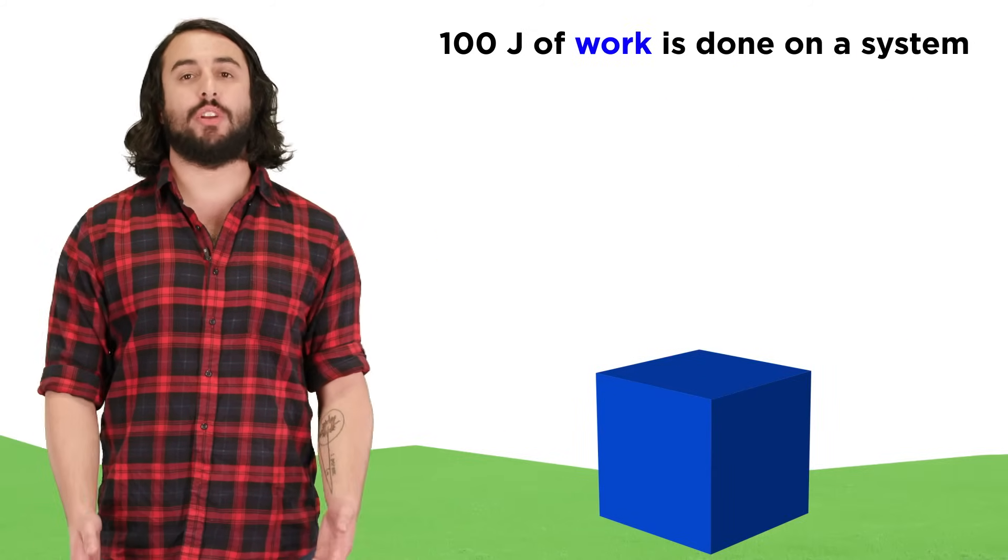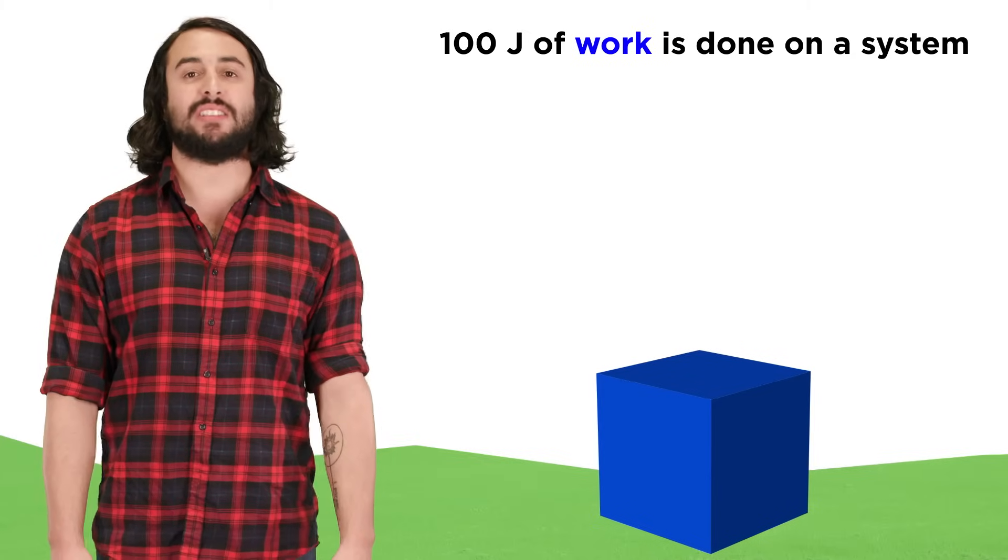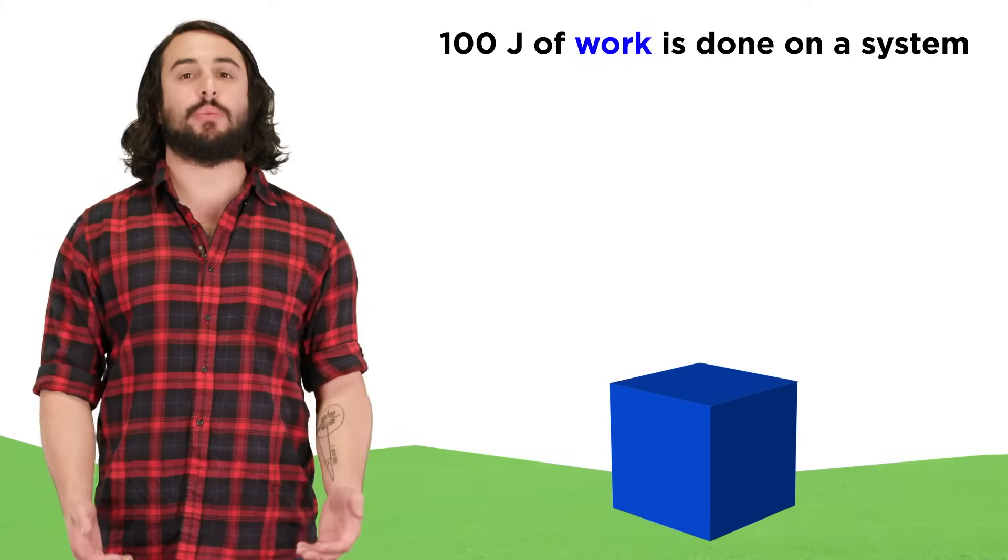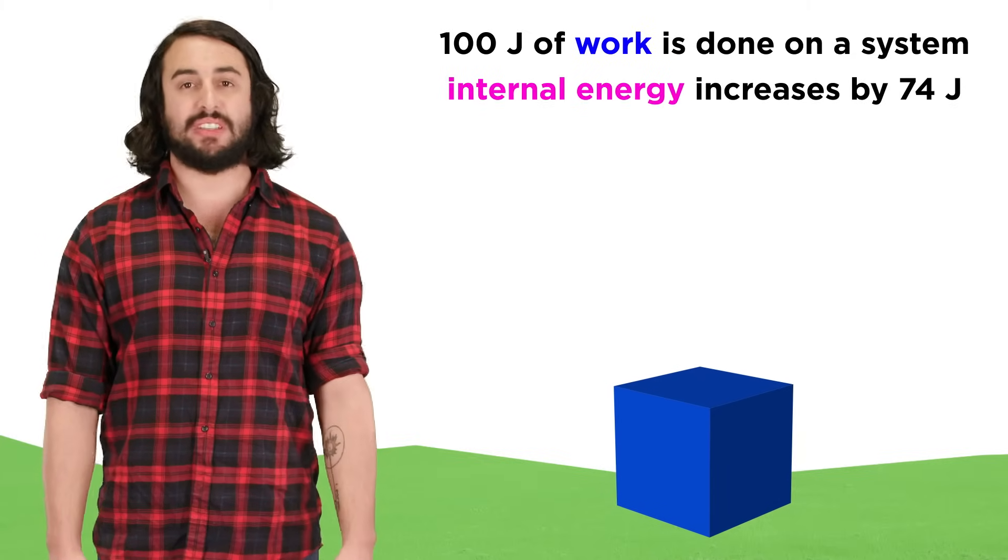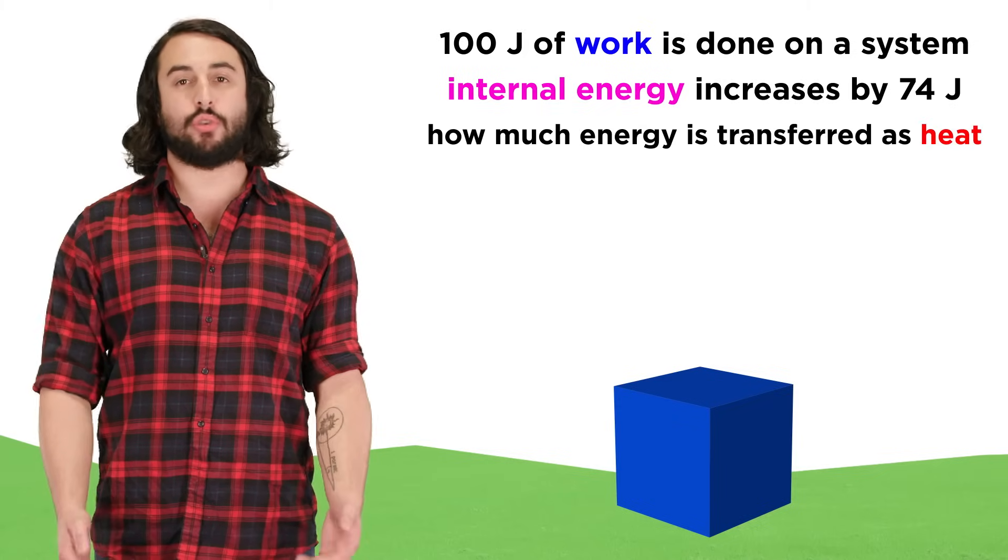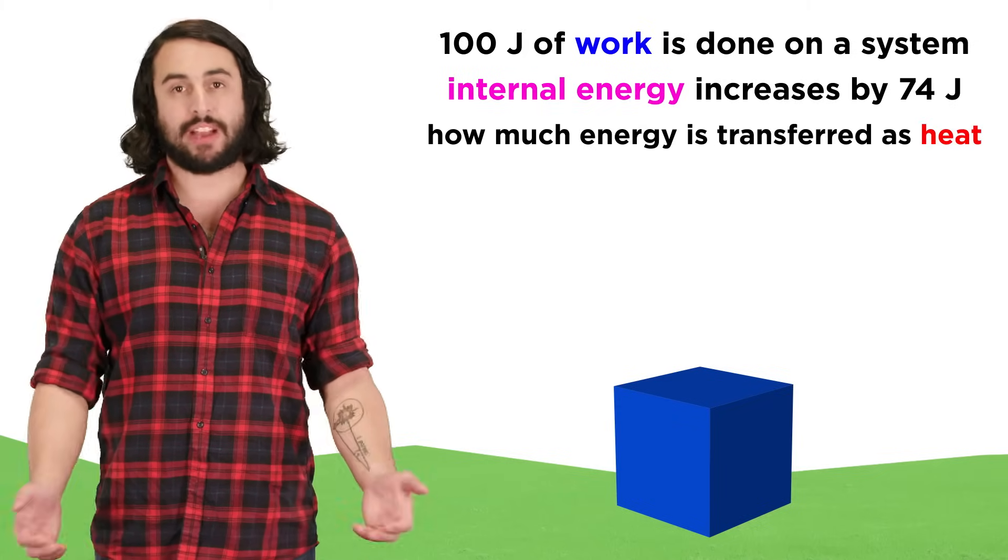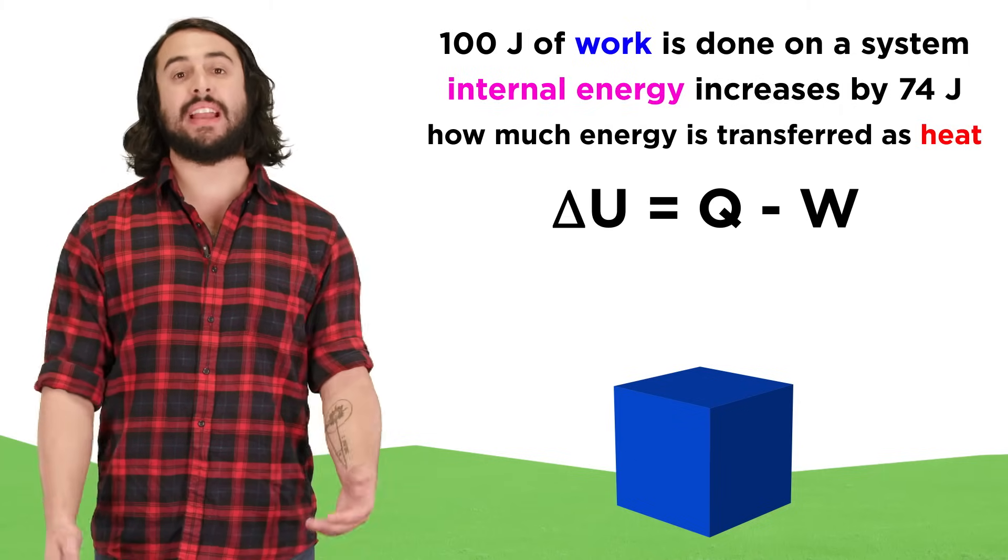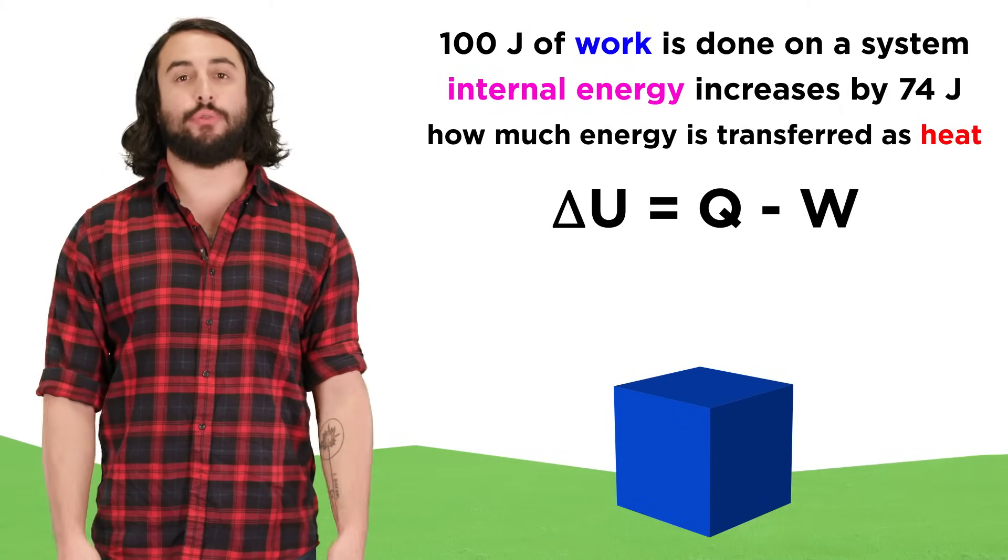For example, if 100 joules of compression work is done on a system, and as a result the internal energy of the system increases by 74 joules, how much of the energy is transferred as heat, and in which direction? Let's take our equation and rearrange to solve for Q, which will be delta U plus W.